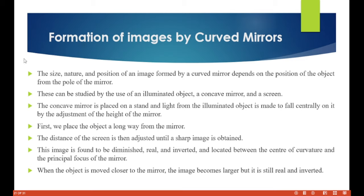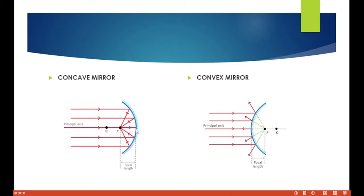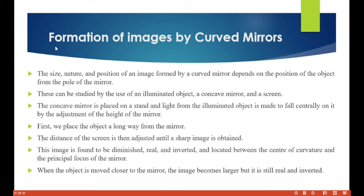The pole is this point on the mirror — the distance from the pole determines the size of the image formed. This can be studied using an illuminated object, a concave mirror and a screen. The concave mirror is placed on a stand and light from the illuminated object is made to fall centrally on it. First we place the object a long way from the mirror, then the distance of the screen is adjusted until a sharp image is obtained.